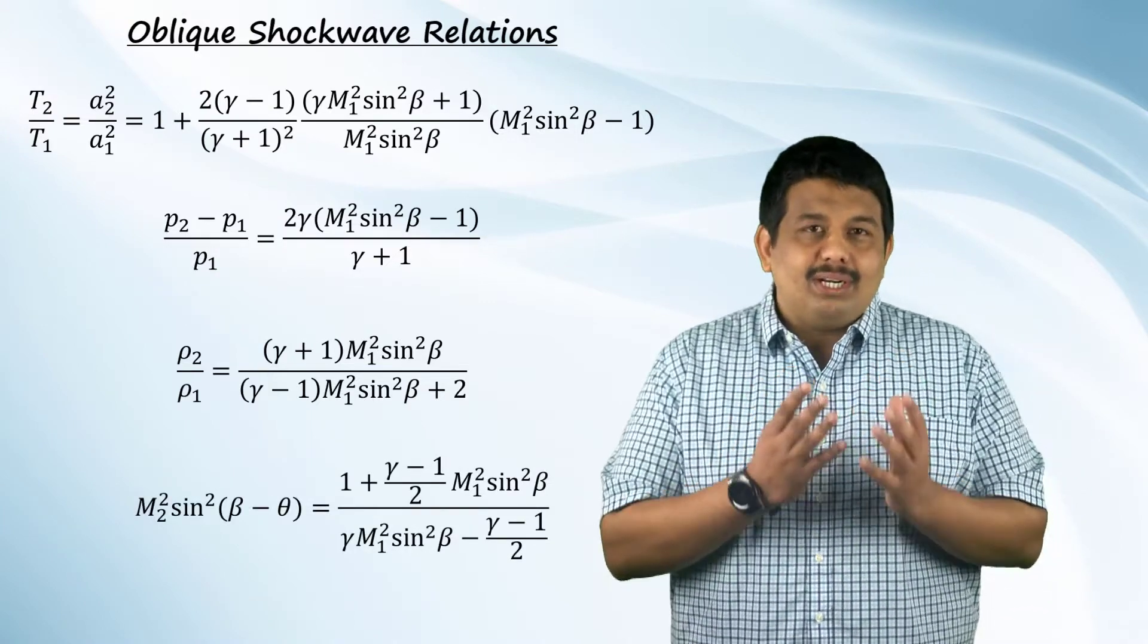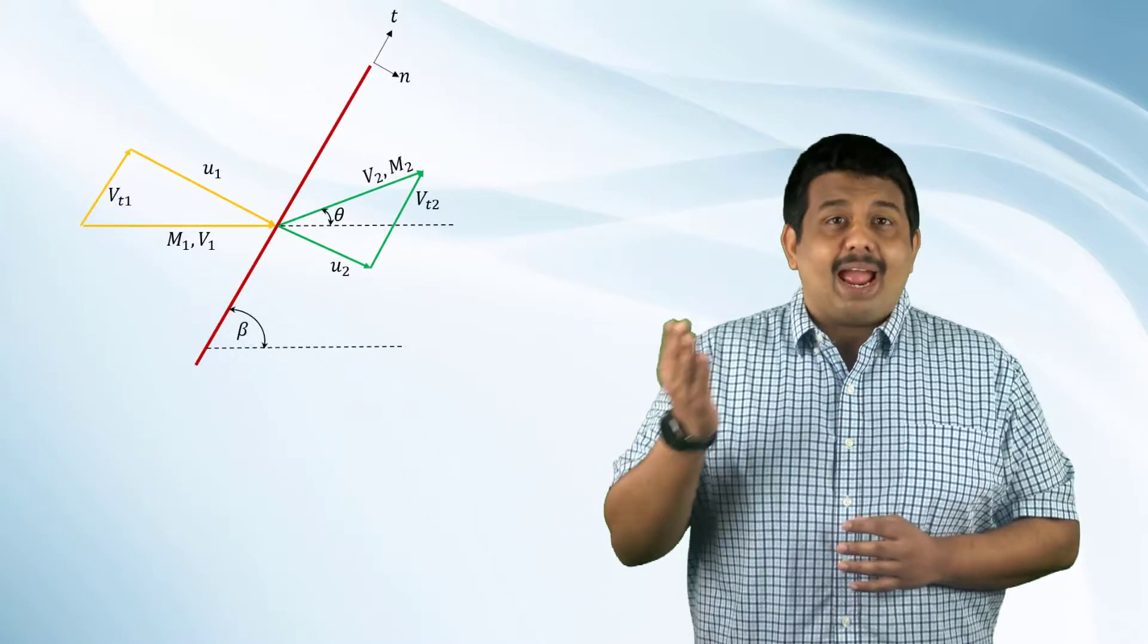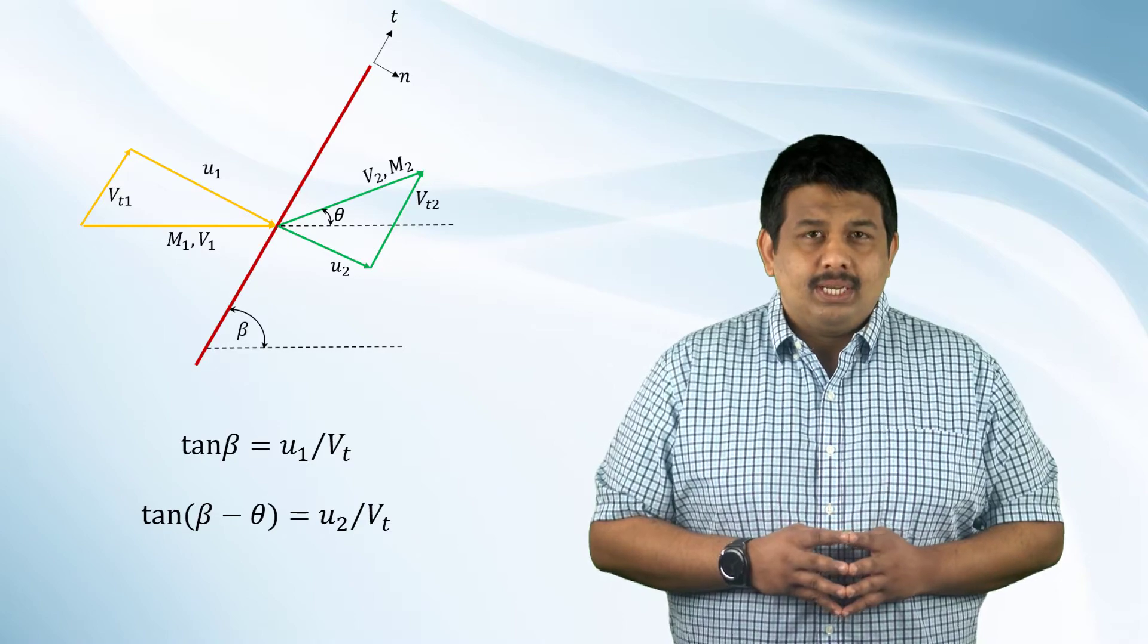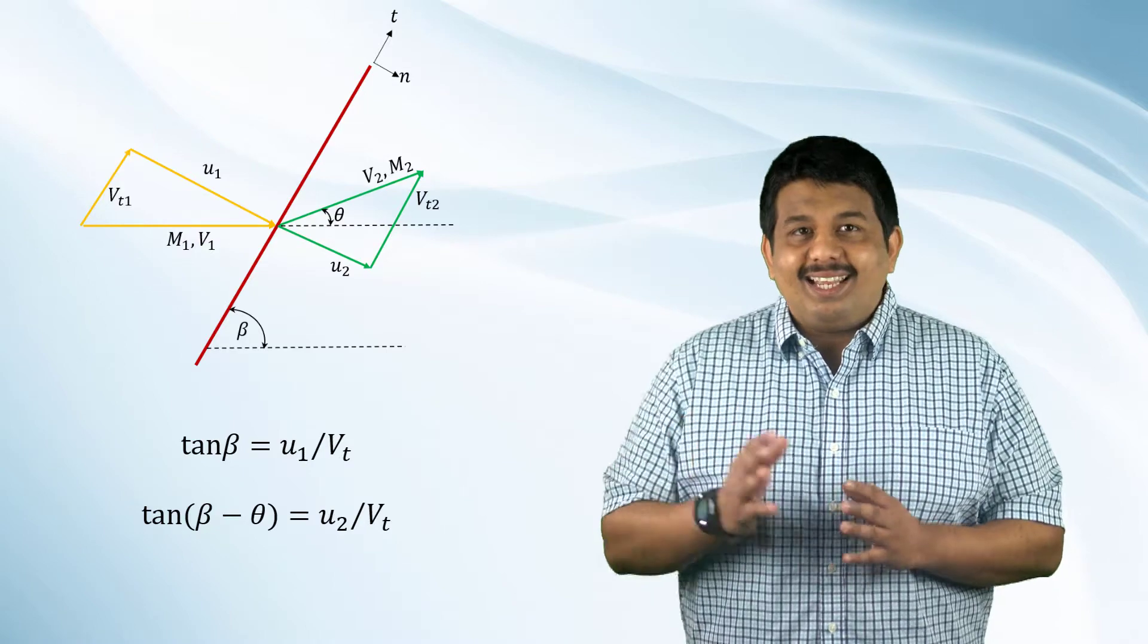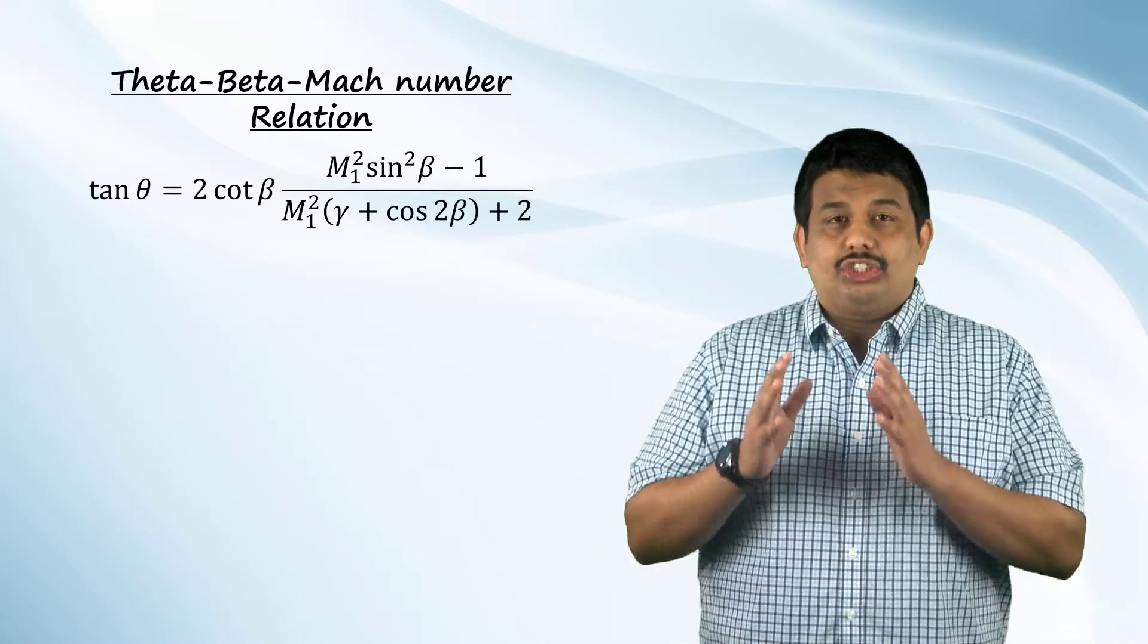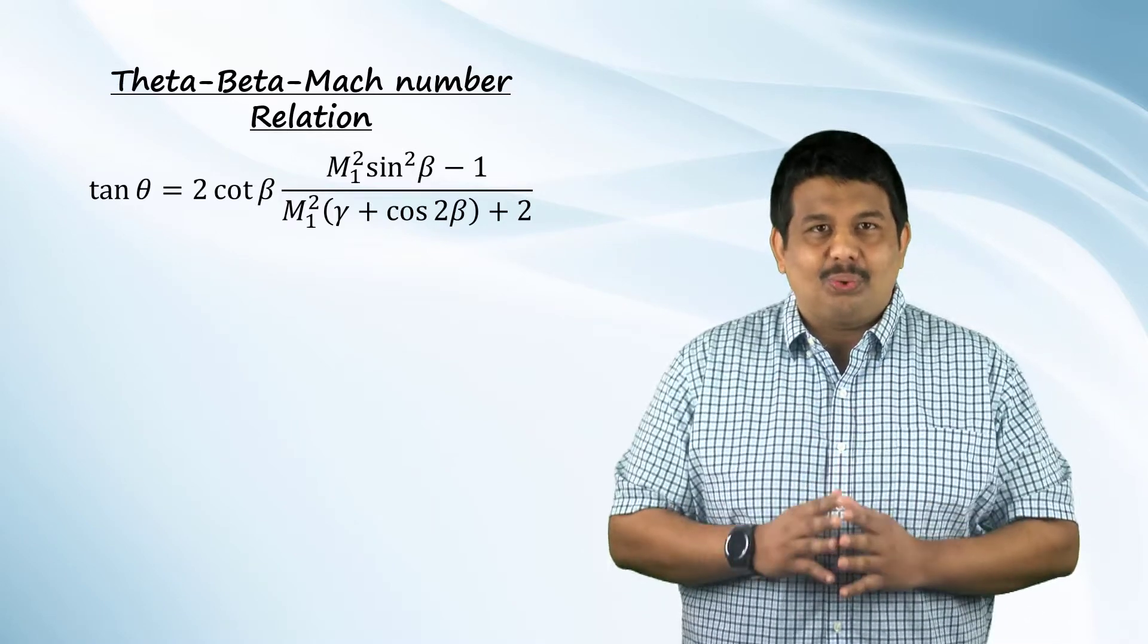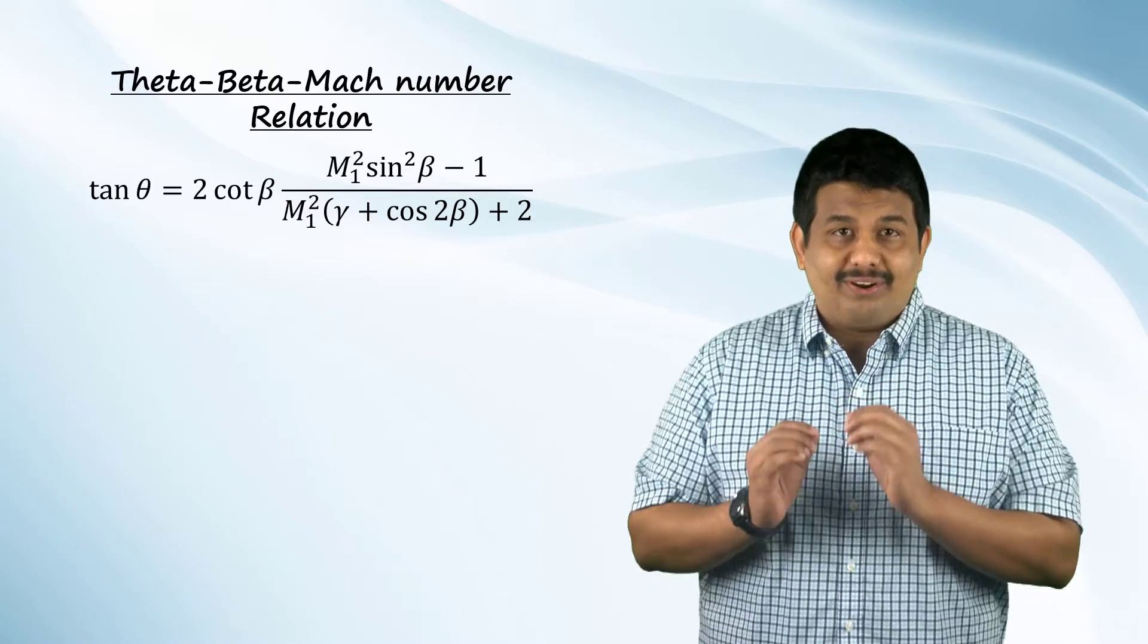The Mach number downstream of an oblique shock wave is given by the following equation. From the velocity triangles upstream and downstream of the shock, we have the following relationships. Combining these relations with the continuity equation and the density ratio across the oblique shock, we can write an expression connecting the deflection angle, the shock angle and the Mach number upstream of the shock wave as shown here. This is the very famous theta-beta Mach number relation.